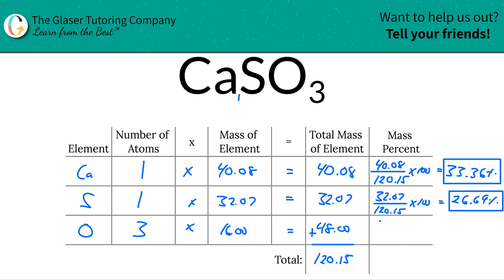And then last but not least is oxygen. Take the total mass of oxygen, which is 48.00. Divide that by 120.15, multiply it by 100, and get your percent. So this works out to be, considering the rounding, 39.95%.